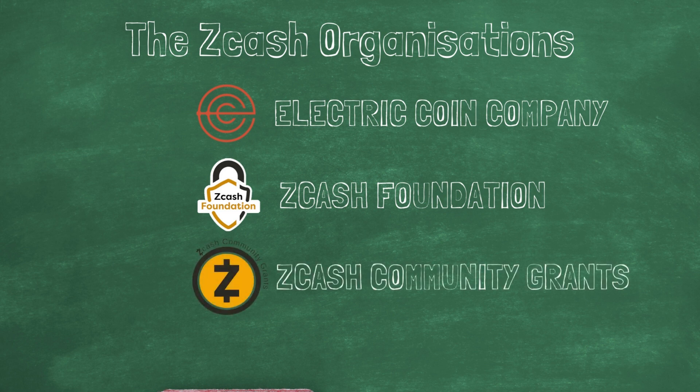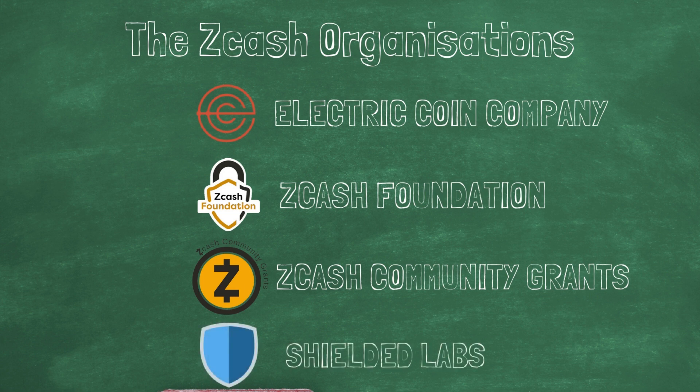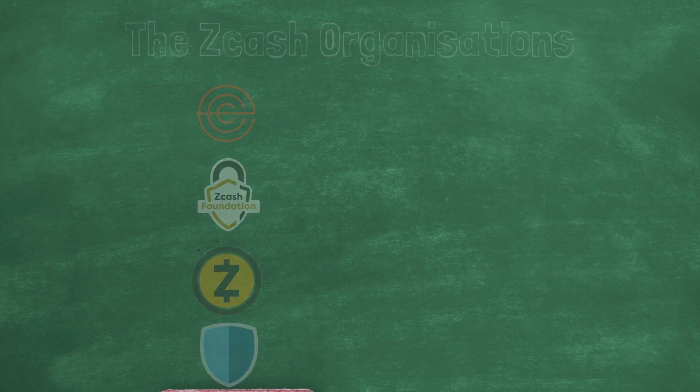The Zcash Community Grants Programme, or ZCG, funds a range of community-funded projects such as Zingo Wallet, the development of Zcash Shielded Assets, and many others. Shielded Labs is a new organization based in Switzerland, with the express goal of further decentralizing the development and sustainable maintenance of the network.